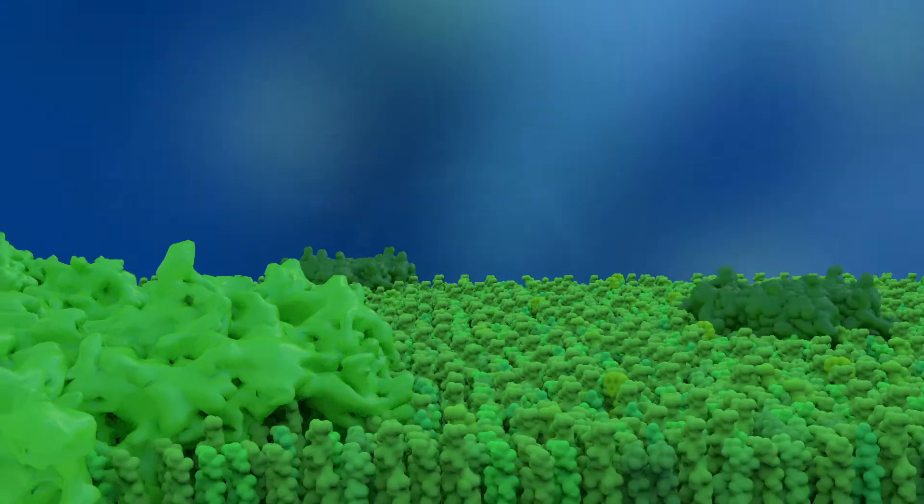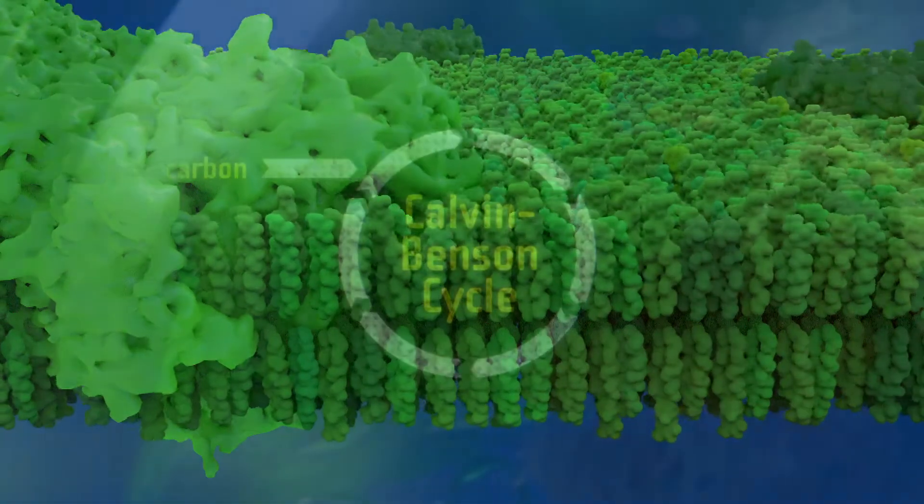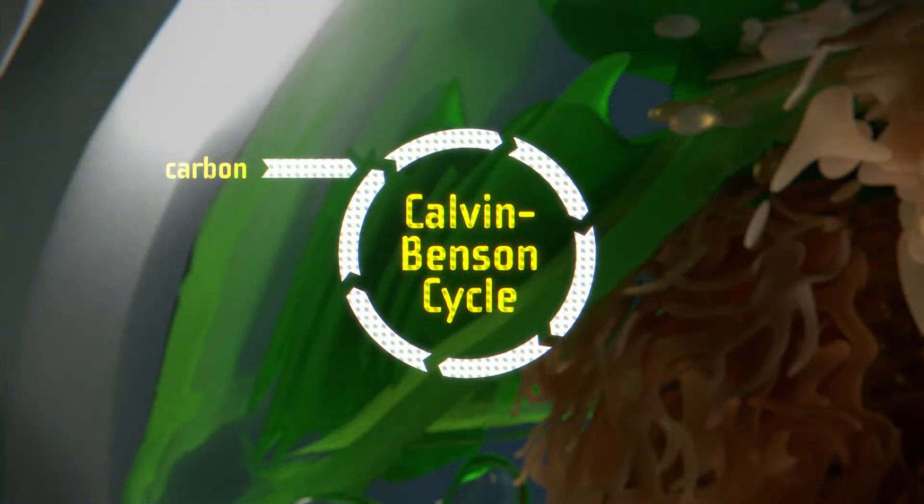In the Calvin cycle, CO2, a carbon source, is reduced to organic carbon building blocks.